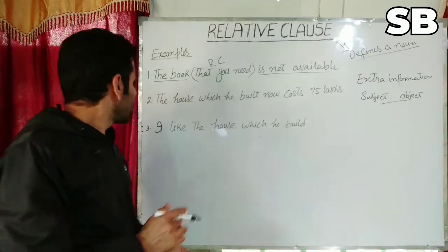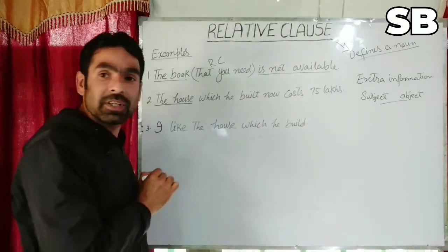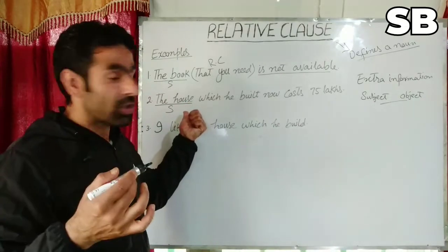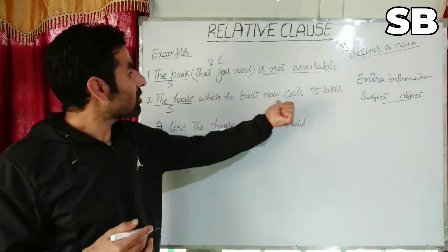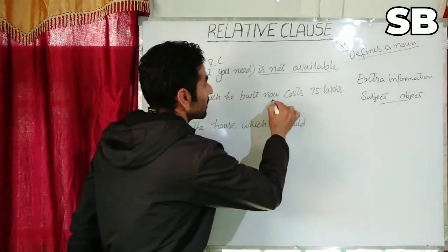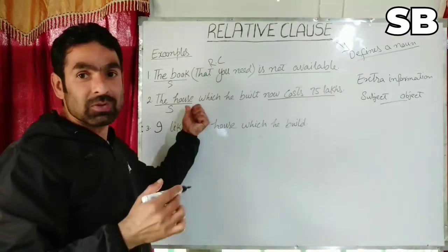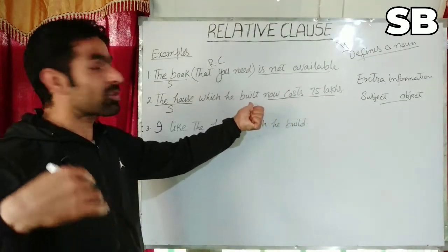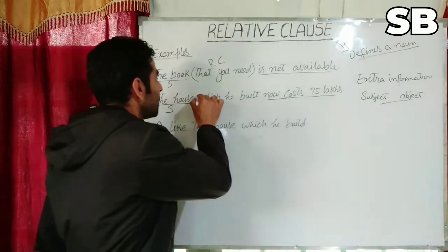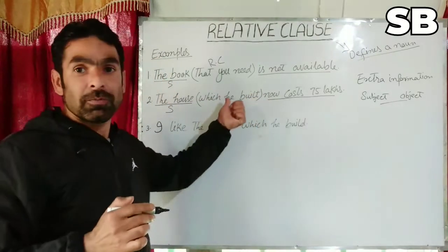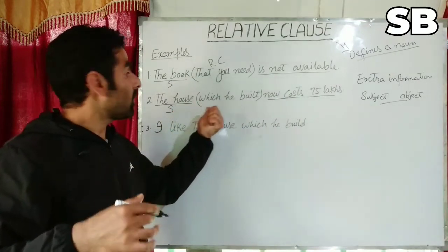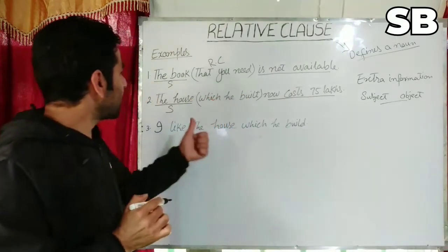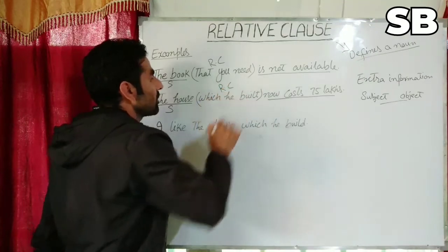The second sentence: 'The house which he built now costs 75 lakhs.' We are talking about the house — that is the subject. What is being said about it is that it costs 75 lakhs. There is also extra information about the house: 'which he built' — that is the extra information, and we call it a relative clause.